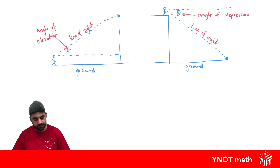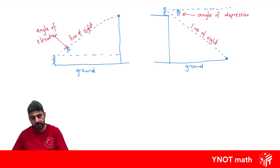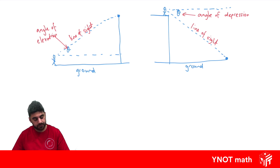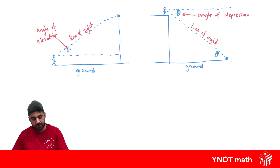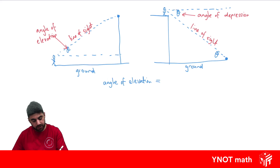What's important is that this horizontal line and this horizontal line are parallel. And we know when you have parallel lines and a transversal, that alternate angles are equal. So this angle actually equals this angle, which would be the angle of elevation if someone was looking up at you. So this angle here is the angle of elevation, and now we know that the angle of elevation equals the angle of depression.